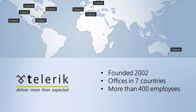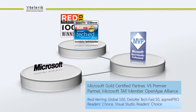Telerik was founded in 2002 around the introduction of .NET itself, and has grown to be a worldwide company with offices in more than seven countries and more than 400 employees worldwide — U.S. headquarters in Boston and corporate headquarters in Sofia, Bulgaria. Along the way we've racked up a few awards: we're a Microsoft Managed Partner, have MVPs and RDs on staff, and have won industry awards like the Red Herring Global 100 and Best of TechEd.